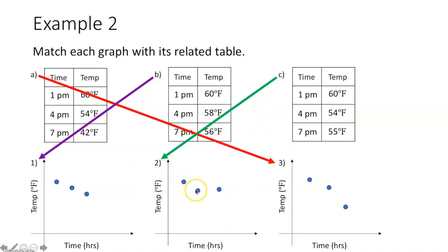For table C, we start at 60°F, drop 6 degrees, and then actually increase by one degree after the next three hours. That's obviously going to be graph two — the only one left — where we drop a little and then increase a little.